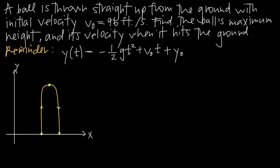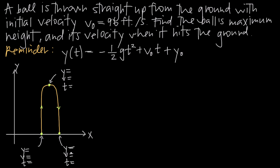We say that y is position. For the initial point we need to find position, velocity, and time. For the maximum height point, we need to find position, velocity, and time. And for the end point when the ball hits the ground, we again need to find position, velocity, and time. You always want to put all three of those on your diagram and then fill in whatever you know.